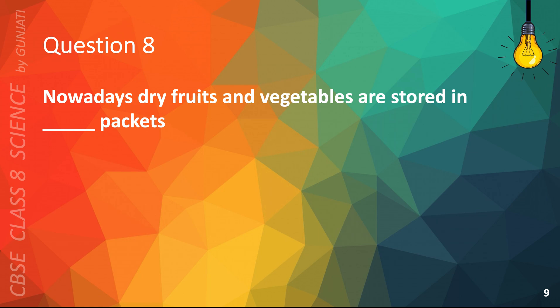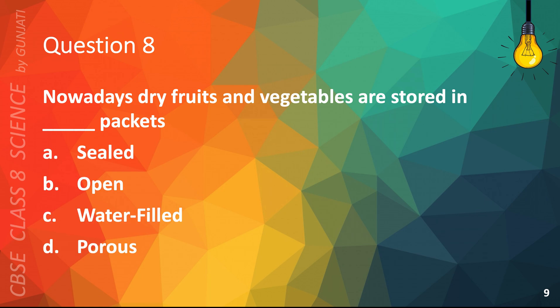Question 8. Nowadays dry fruits and vegetables are stored in blank packets. A. Sealed, B. Open, C. Water-filled, D. Porous. The correct answer is A. Sealed.